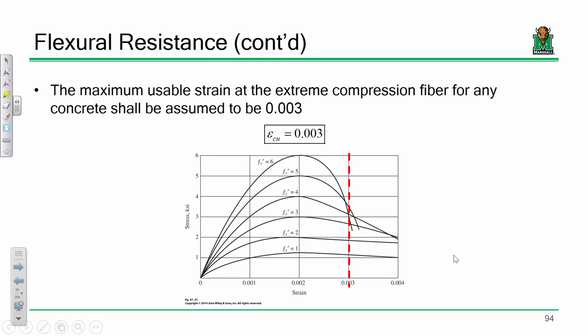One of the things we always assume at the ultimate stage is a constant: the strain in the concrete at the very top of the beam is 0.003. That's a constant value we'll use regularly for the next few weeks, so lodge it in the back of your head. It works well for structural concretes — most are 3 KSI or above, and for all of those, 0.003 is a pretty good maximum usable strain.